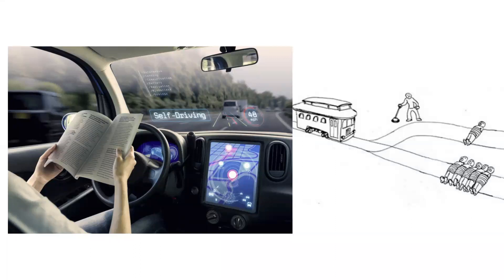Here's another scenario: we're driving down a one-way road with just one lane. There are five people in front of us and a brick wall on either side. The brakes fail. There's one person in the car. Do we code the car to swerve into a brick wall and kill the driver, or do we program the car to continue forward and kill five people? In other words, do we favor our one driver or favor five pedestrians?